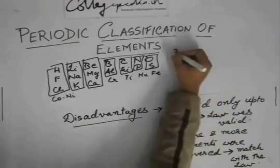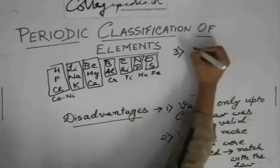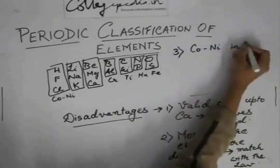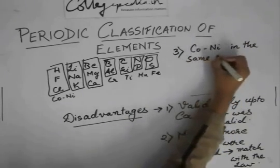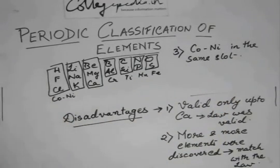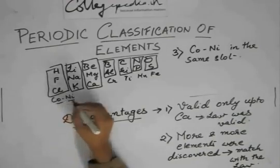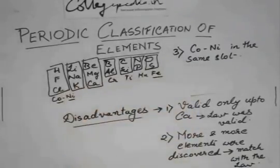I'm writing the third disadvantage over here. The thing was that he tried to adjust copper and nickel in the same slot, as I said, but they did not match, their properties did not match with the other group members. Because hydrogen, fluorine, chlorine, they are all non-metals, copper and nickel are metals. And moreover, copper and nickel, they resemble iron in many ways. But iron has been placed far away from them.